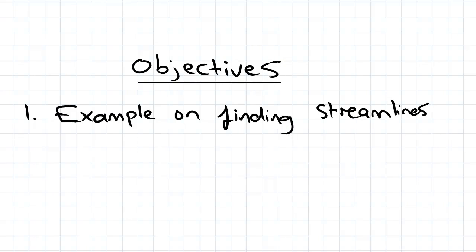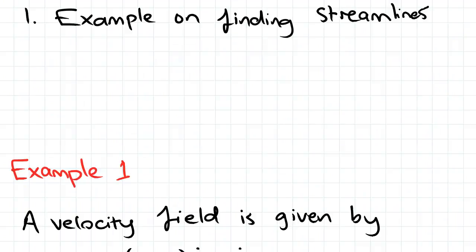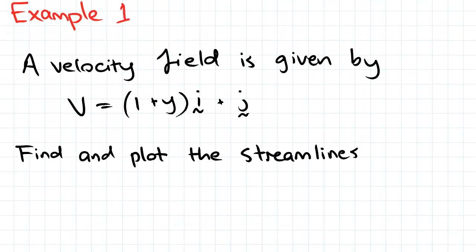Hey guys, so in this video we're looking at a quick example on finding streamlines. So we've been given a velocity field equal to 1 plus y i plus j, and we've been asked to find and plot the streamlines. So we know the general equation for a velocity field